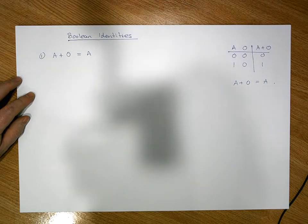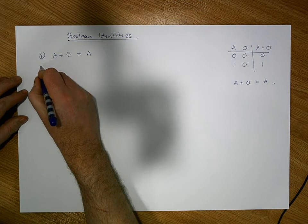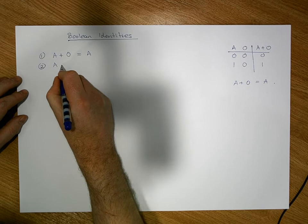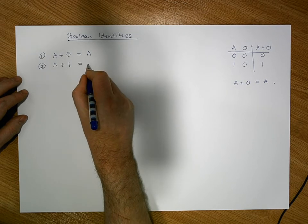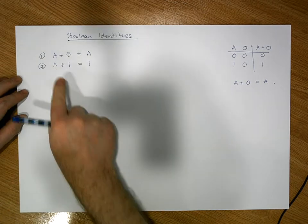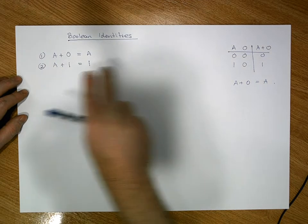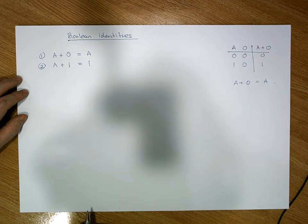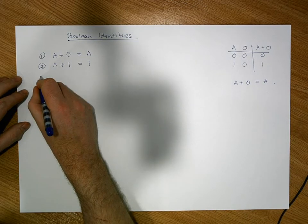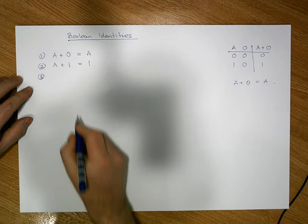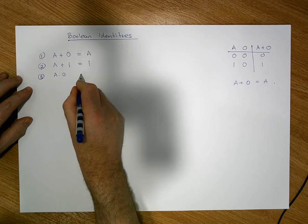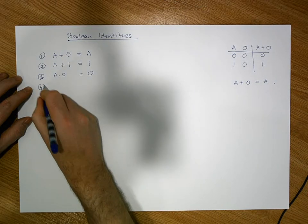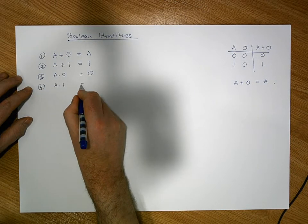The next important identity is: A ORed with one is simply equal to one, because anything ORed with one is always one — you could verify this with a truth table. Identity three is that A ANDed with zero is always equal to zero. Identity four is that A ANDed with one is always equal to A.